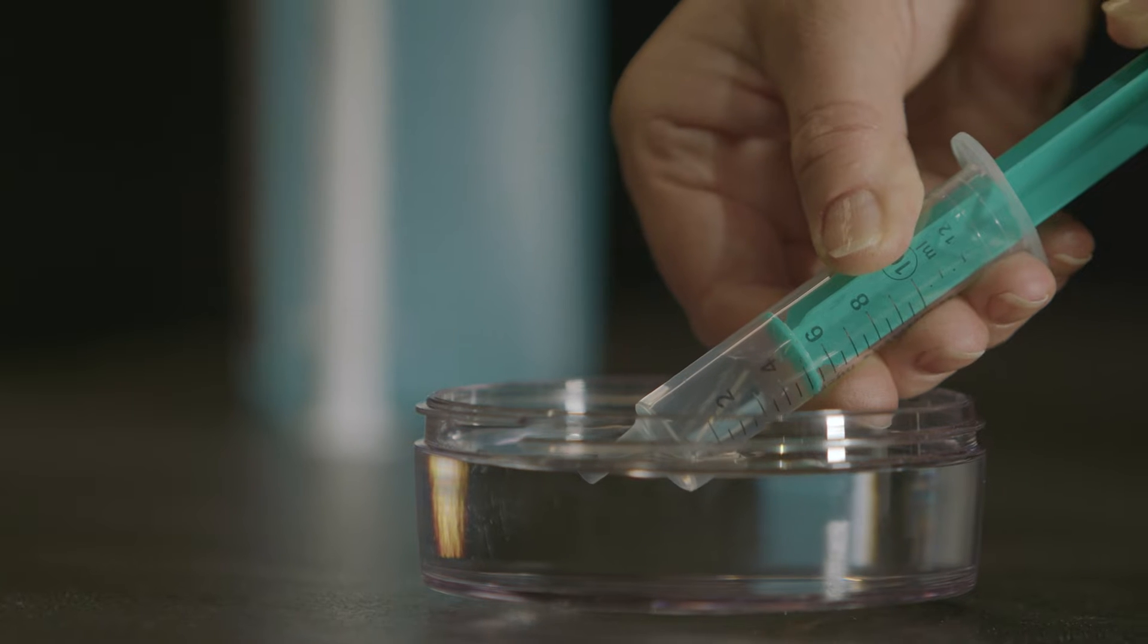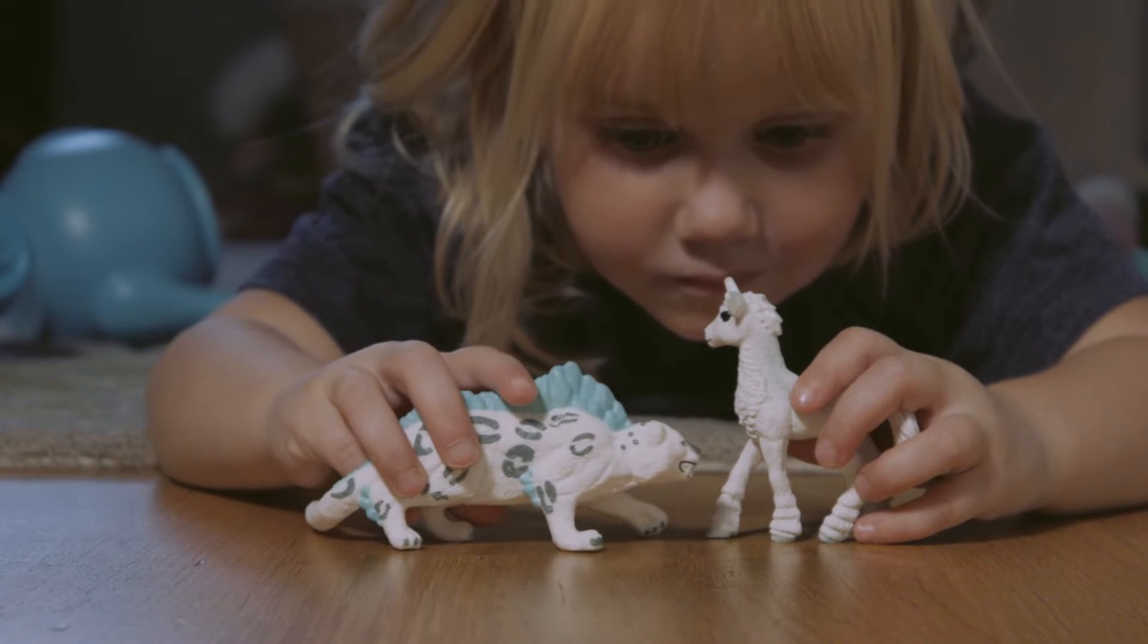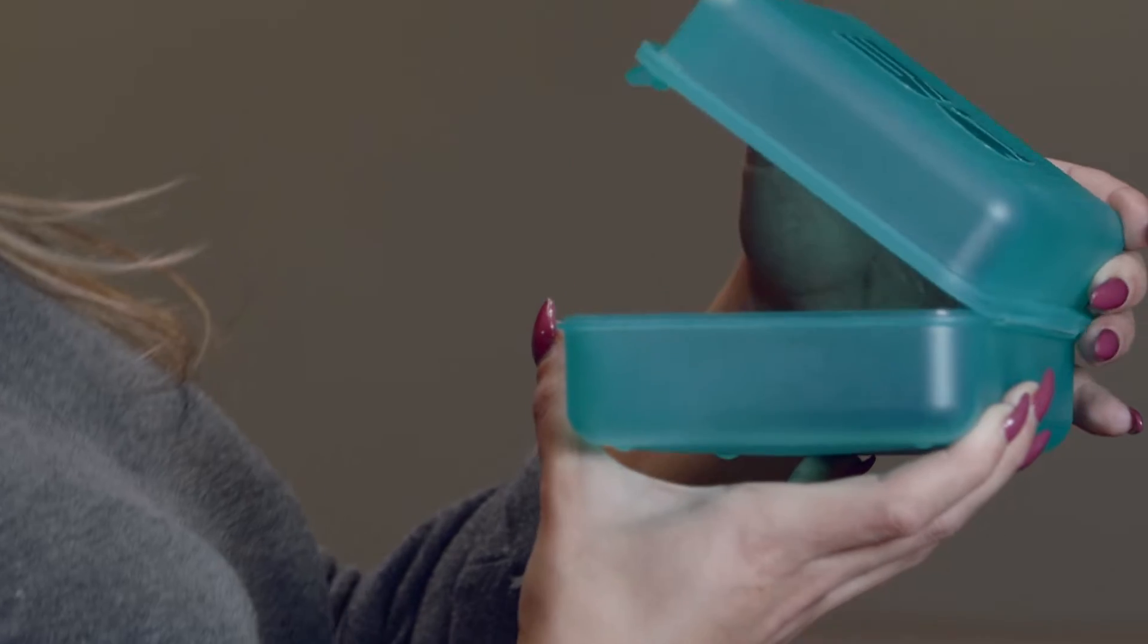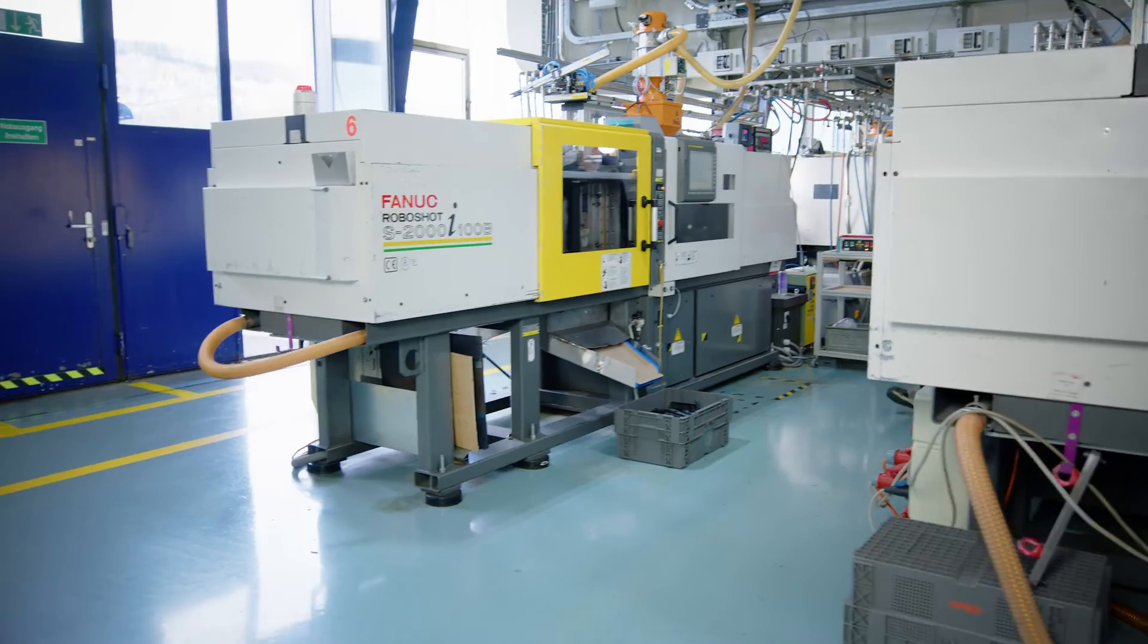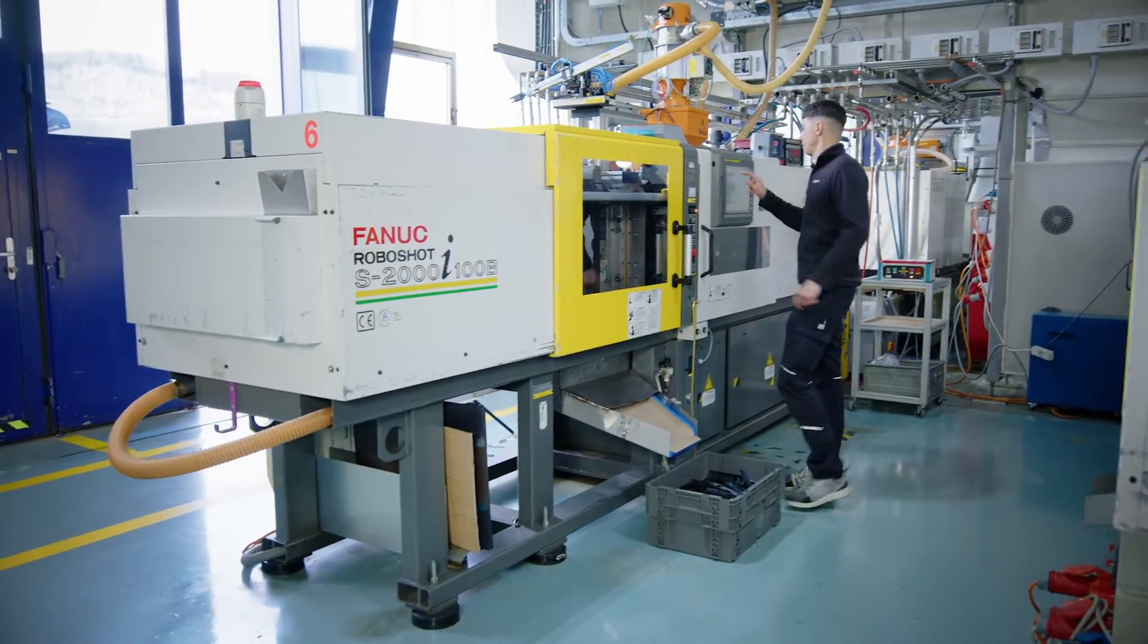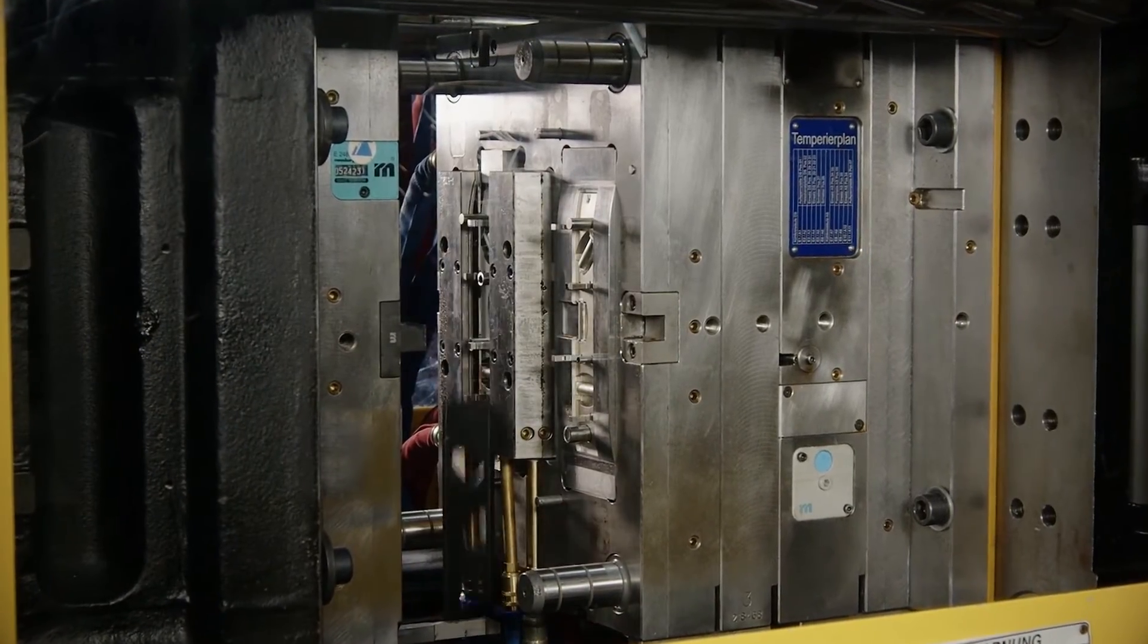We use plastic products every day. We don't often think about where they come from or how they're made. The most common form of mass production is injection molding, a complex but interesting process with many different types of plastic.